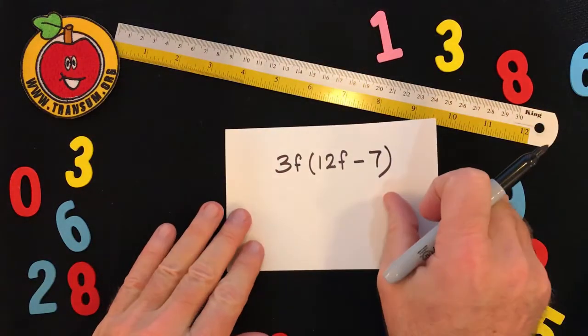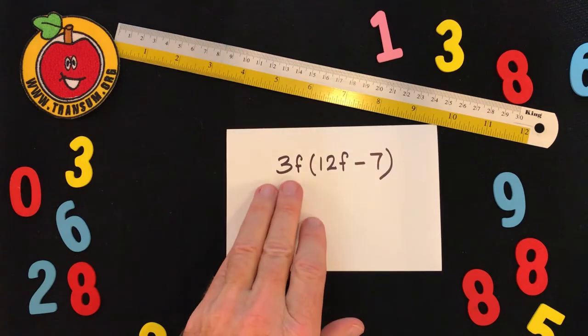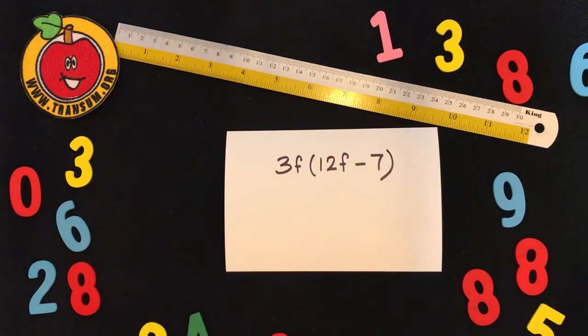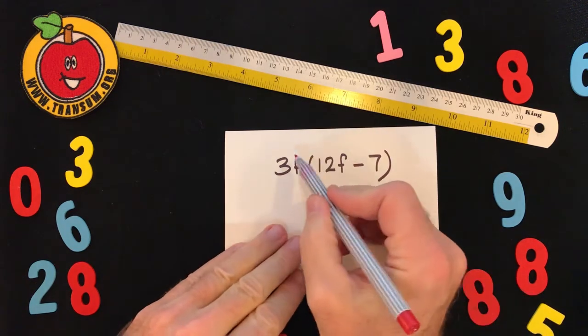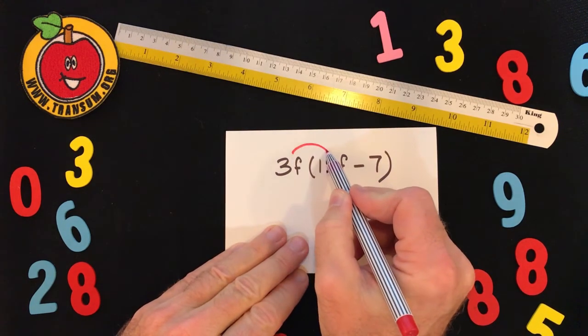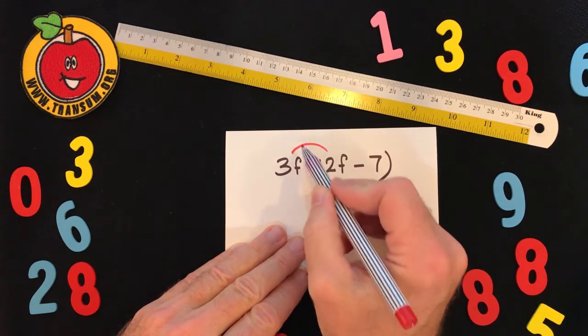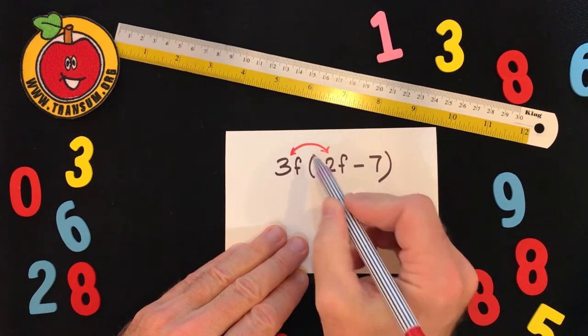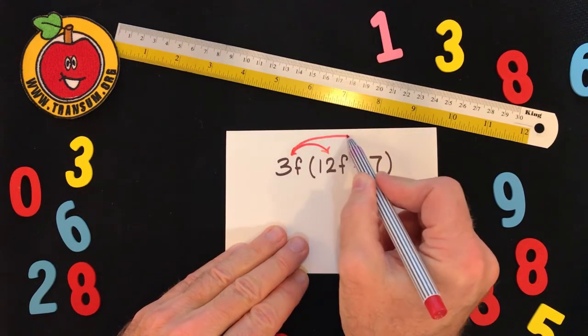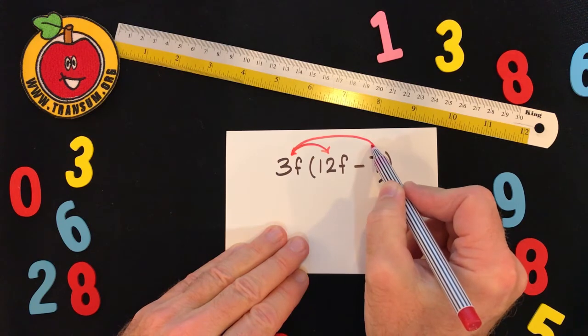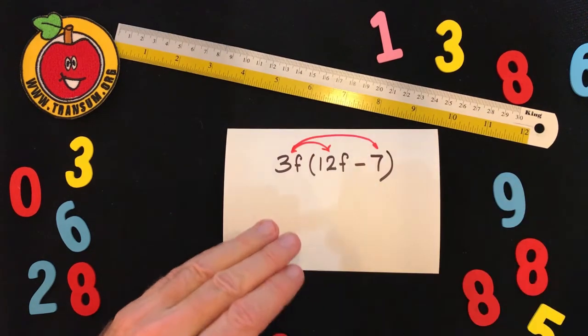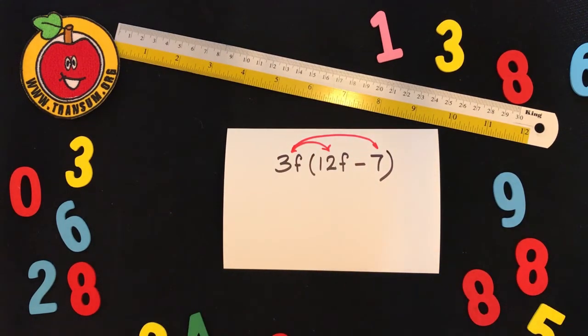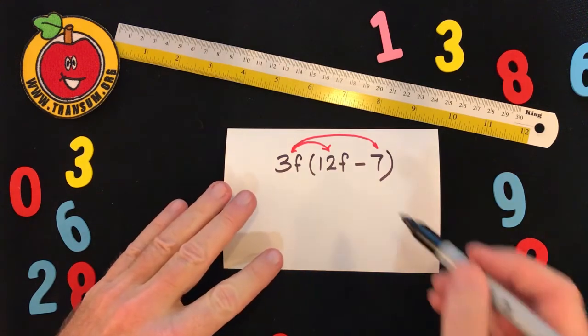Right, another example now. 3f multiplied by 12f minus 7, or you could say 3f lots of 12f minus 7. So I know I've got two pairs of numbers or terms to multiply together.